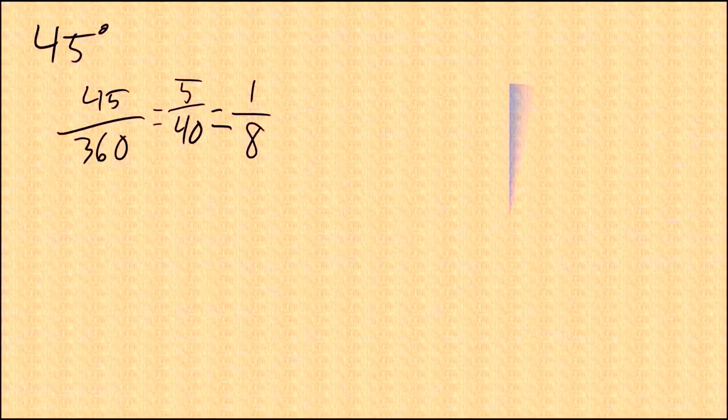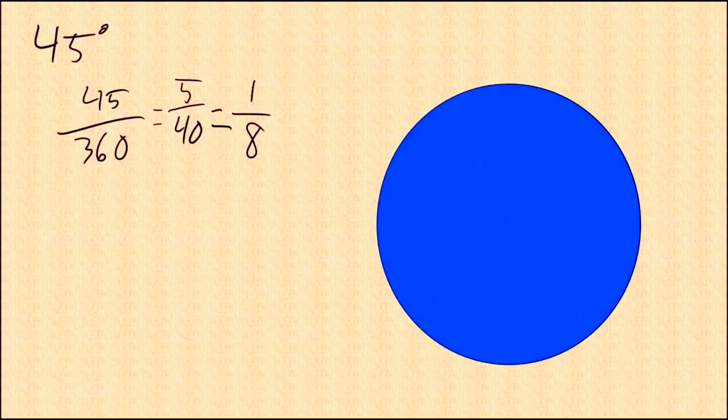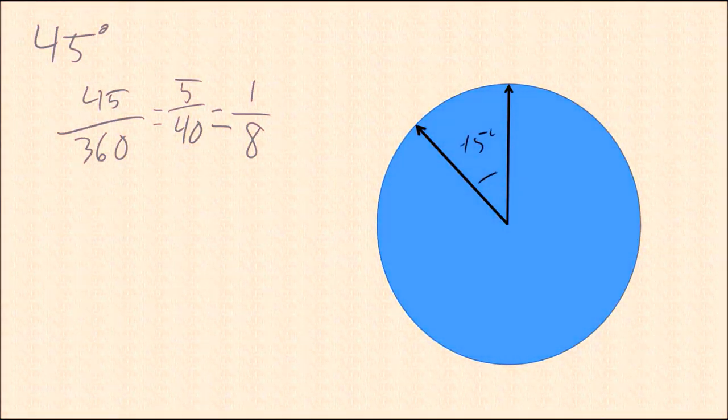You can even take this the other way to show that a 45 degree angle is equivalent to one eighth of the circle. 45 over 360.